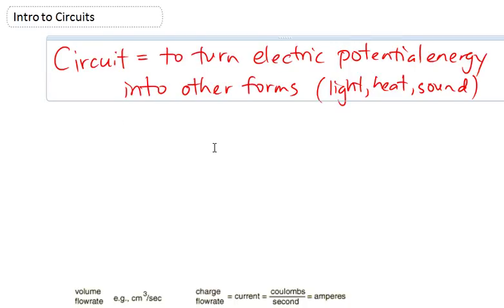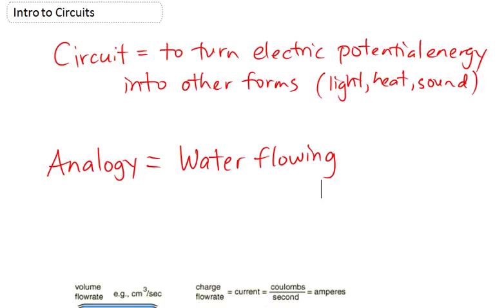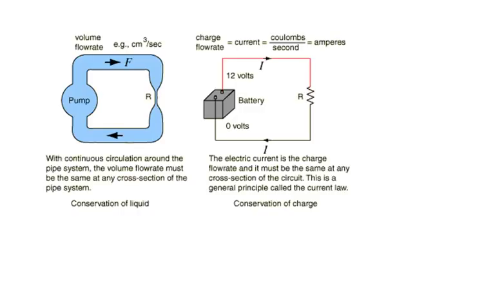Okay, and the basic analogy for this, for a circuit to understand it, is water flowing. And that's really where the word for current comes from, is from the Latin word to flow. So here's a basic diagram of a water circuit, side-by-side, with a basic diagram of an electrical circuit.